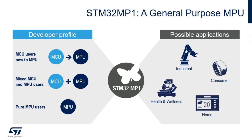The STM32 MP1 is a general-purpose microprocessor with the added benefit of an embedded microcontroller core. This allows it to be applicable to all profiles of developer, whether you are a current microcontroller user new to microprocessors, a pure microprocessor user, or a developer already familiar with a mixed MCU-MPU architecture. Being a general-purpose microprocessor, the STM32 MP1 applies to various use cases and applications from industrial to medical and consumer and wearables to home appliances.